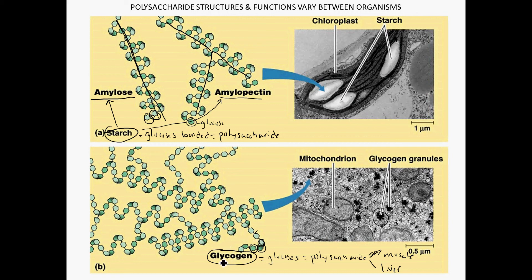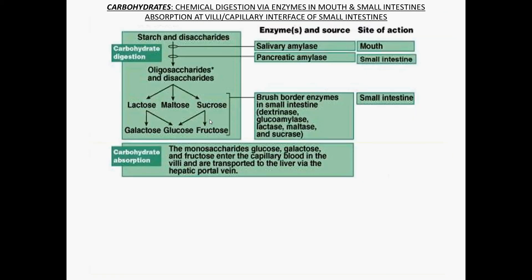When animals have extra glucose, we can store it as glycogen granules in the cell. Glycogen looks similar to amylopectin because it also has a branching nature — branches coming off in multiple directions. So glycogen is similar to but different from amylopectin, and these are polysaccharides you should be able to explain the difference between.